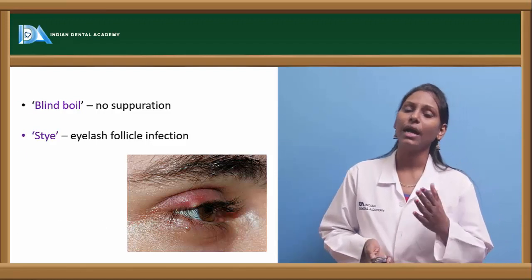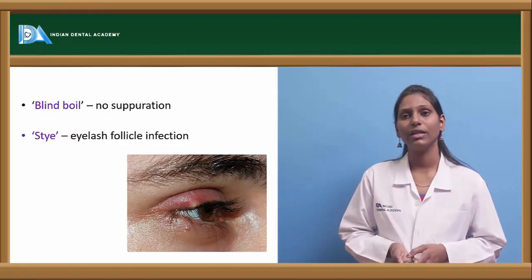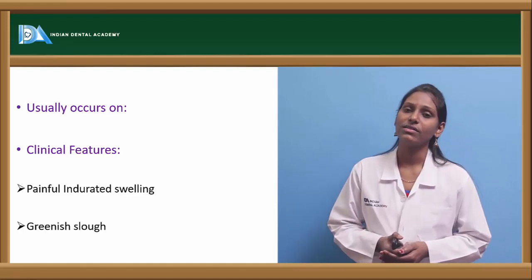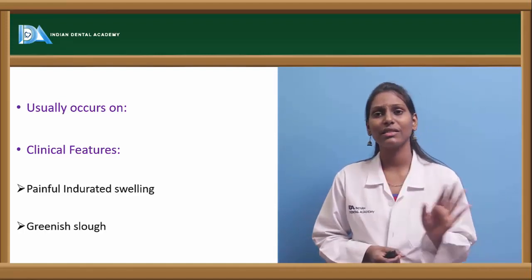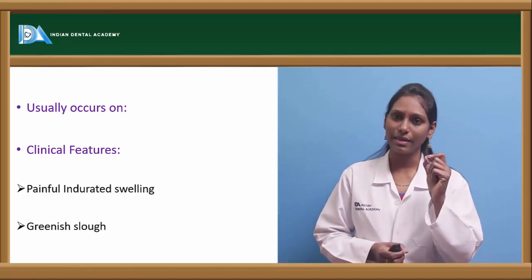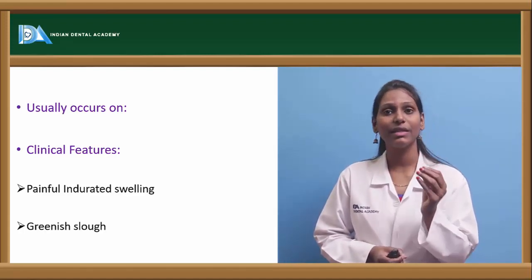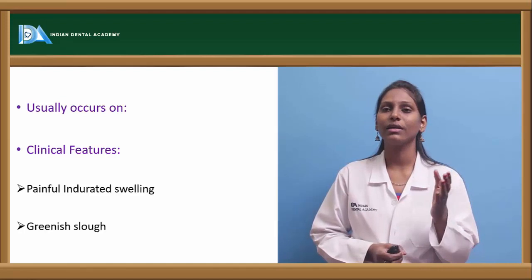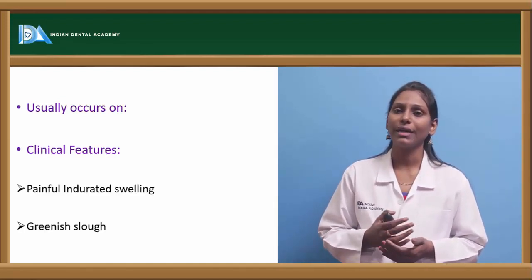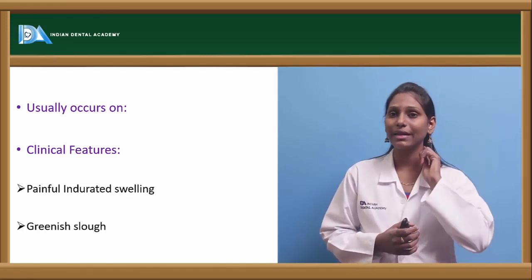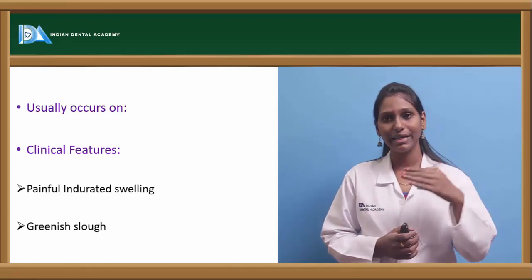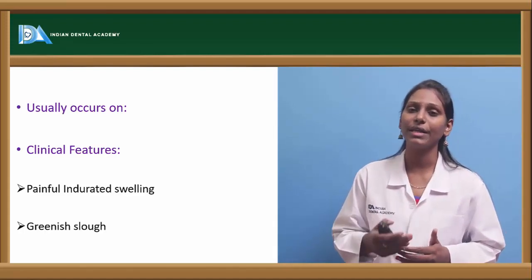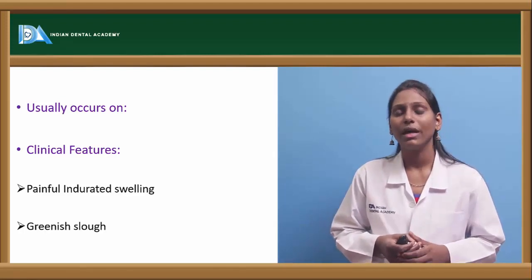A blind boil has no suppuration, and a stye is an eyelash follicle infection. Boils or furuncles usually occur wherever there is hair with hair follicles. The most common areas include the eyelash area, the neck region especially at the occipital area, the groin region, and the axilla.